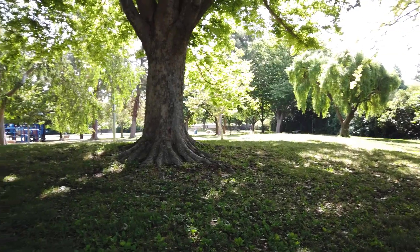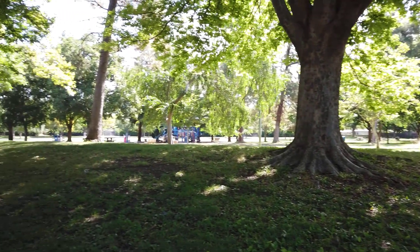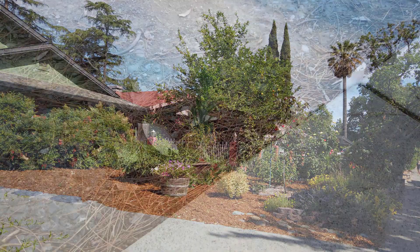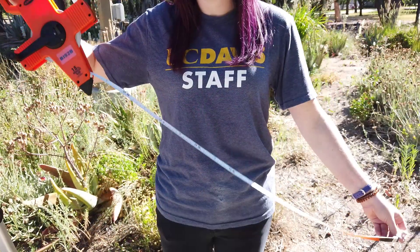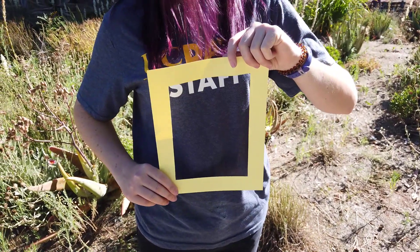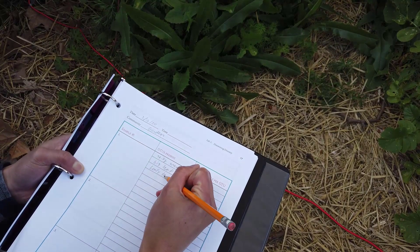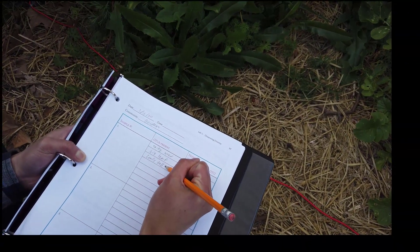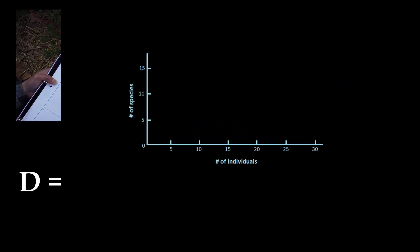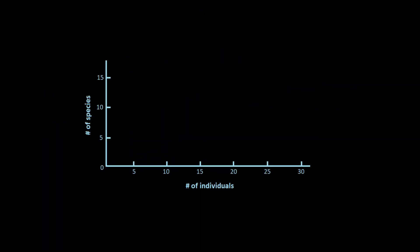For this lab, you will be going to a habitat of your choosing — it could be a park, a yard, or even a sidewalk. You're going to calculate the diversity index for that habitat. You will sample the habitat with either a transect or a quadrat, count the number of species and number of individuals, calculate the diversity index, and then do a rarefaction plot.